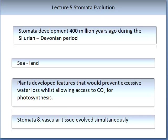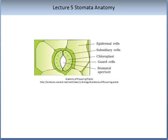Stomata developed a staggering 400 million years ago. This development was driven as plants left the sea and invaded the land. In order to survive this move, they had to develop features that prevent excess water loss while allowing access to carbon dioxide for photosynthesis. Stomata and vascular tissues evolved simultaneously, and without these adaptations, plants in the terrestrial environment would be significantly challenged. Stomata are pores formed by a pair of guard cells which open and close to control exchange between the plant and the environment — they are entry points for carbon dioxide for photosynthesis and exit points for water vapour for transpiration.